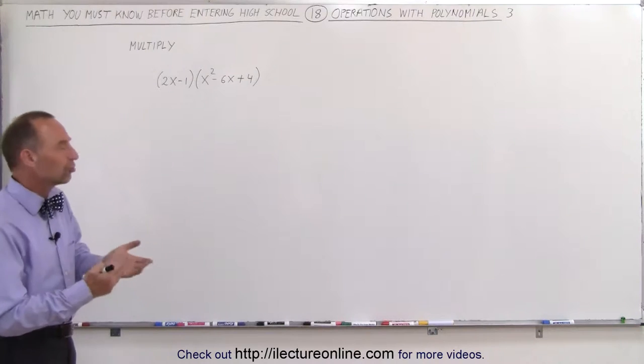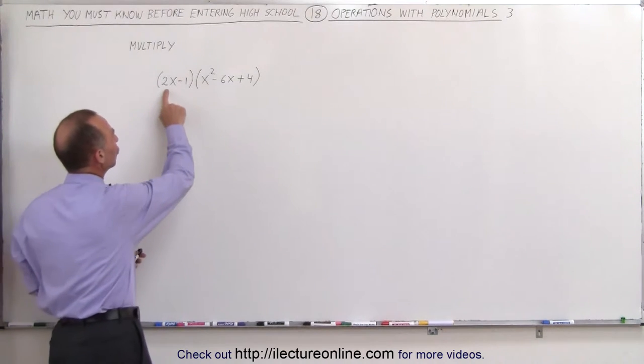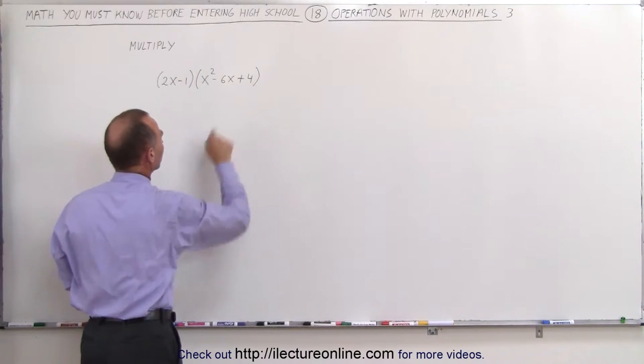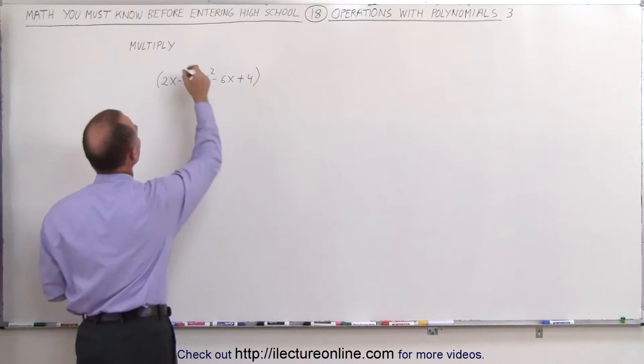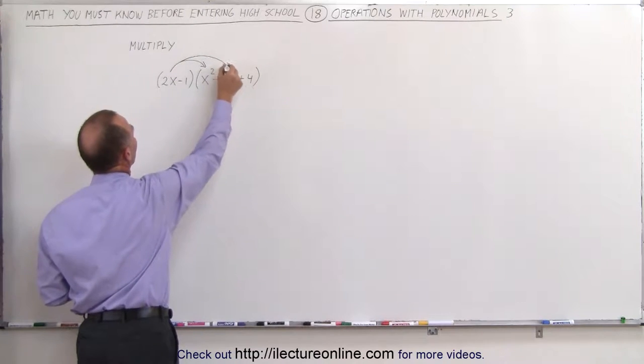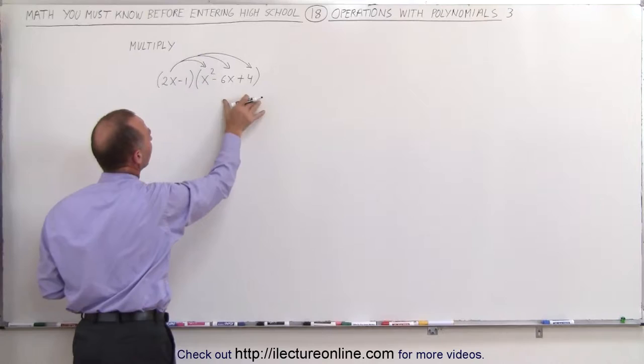The first way is the traditional way where we take each term in the first polynomial and multiply times each term in the second polynomial. So we take the 2x term and multiply it times the x squared, the minus 6x, and the plus 4 here.